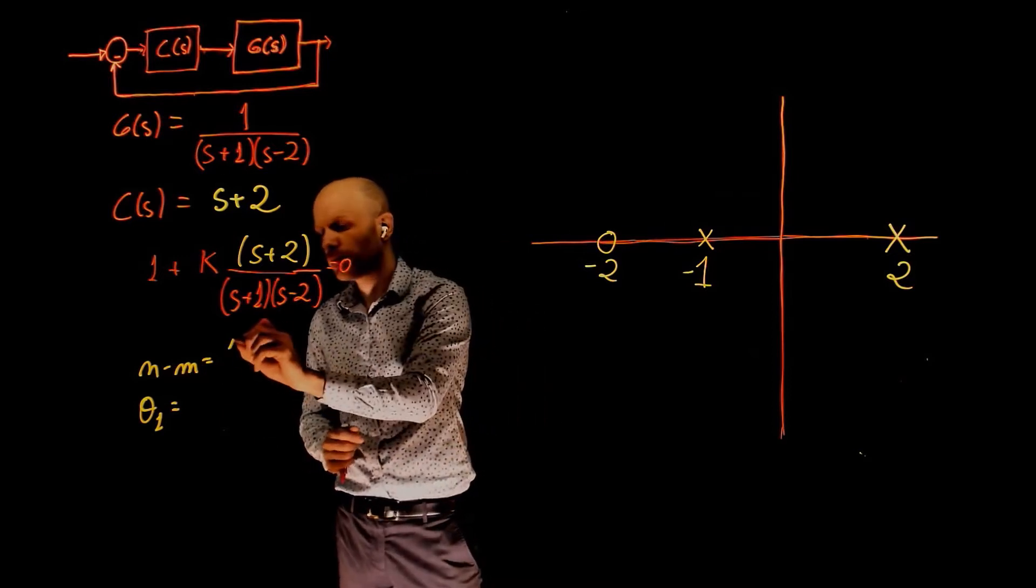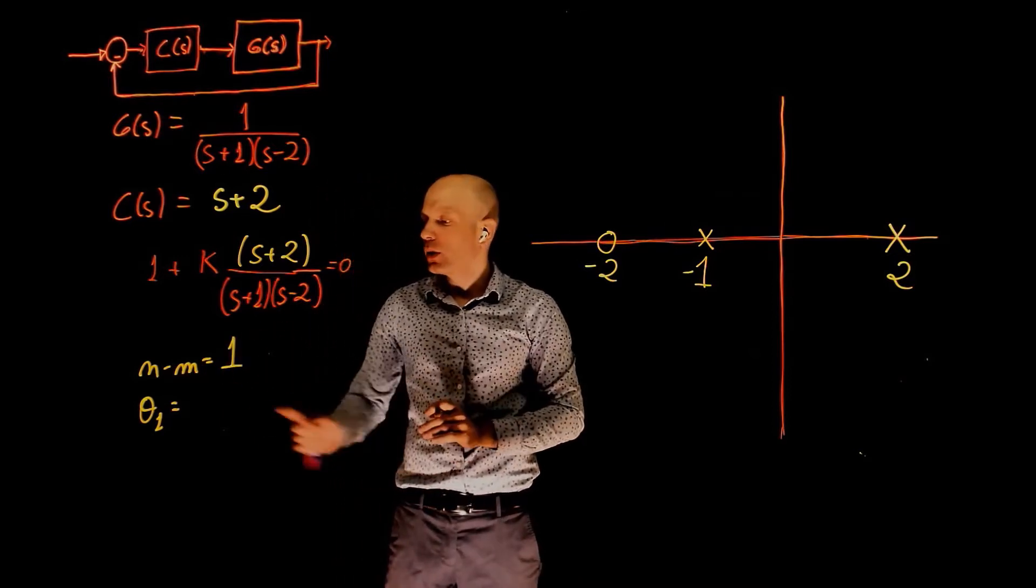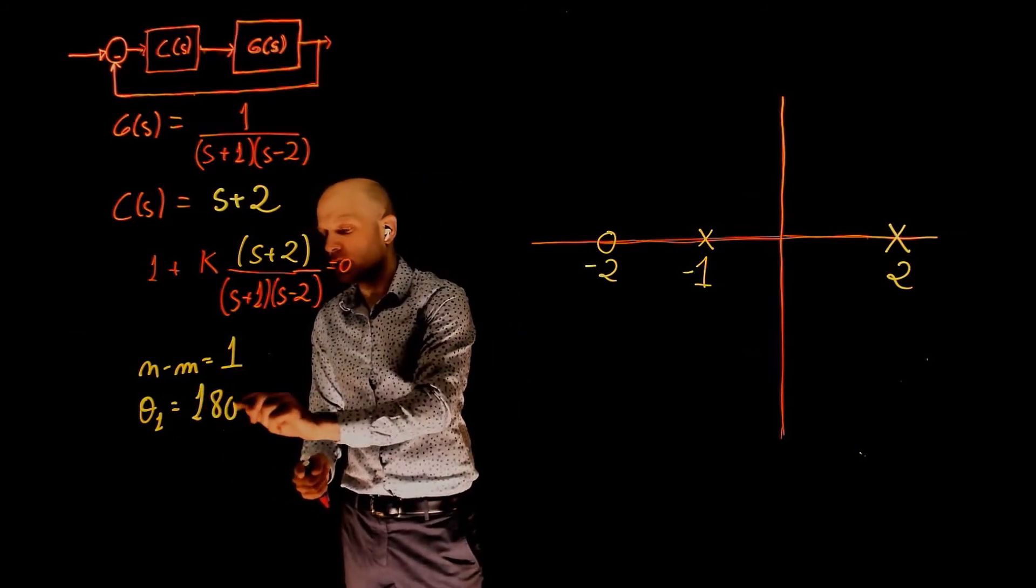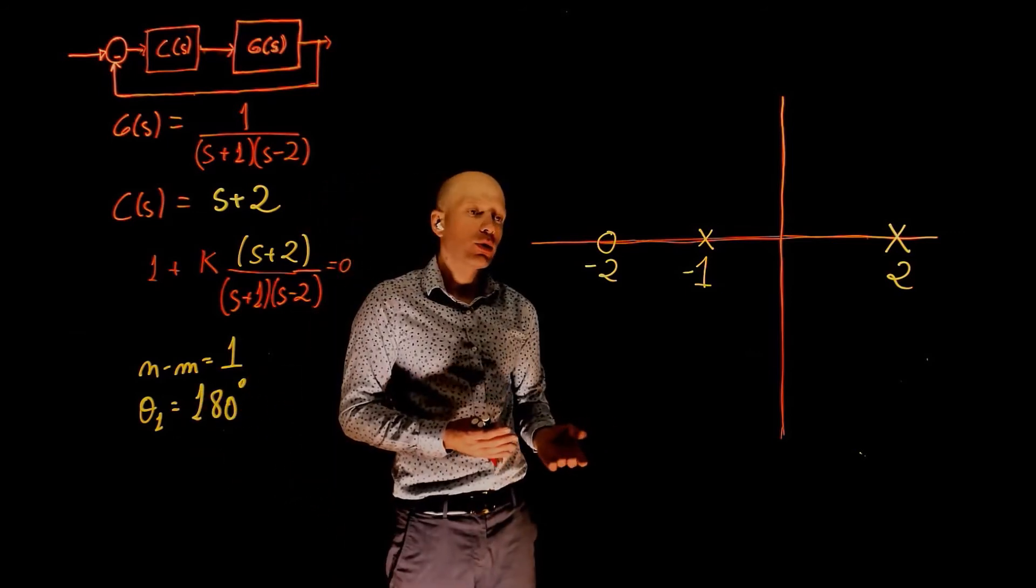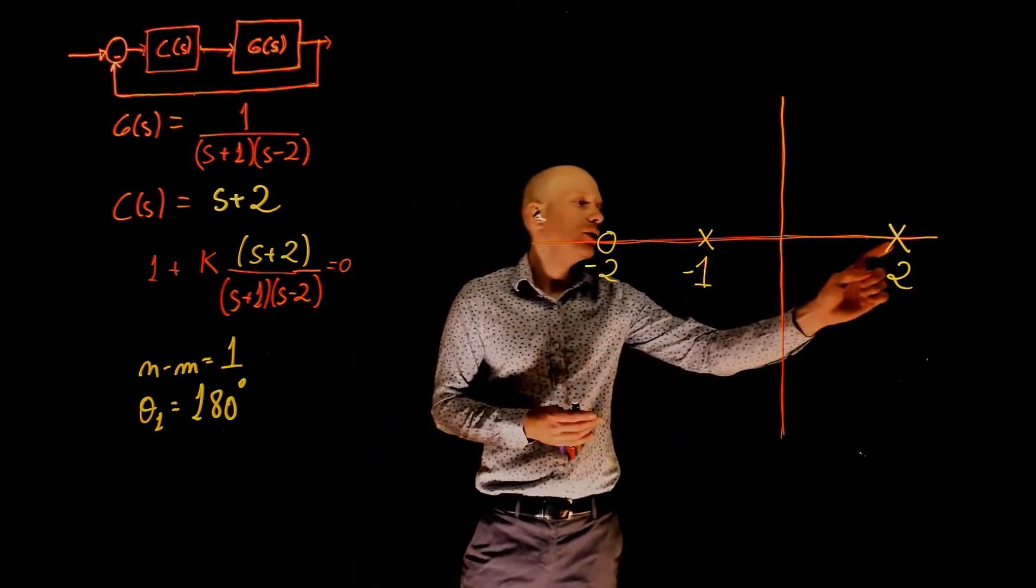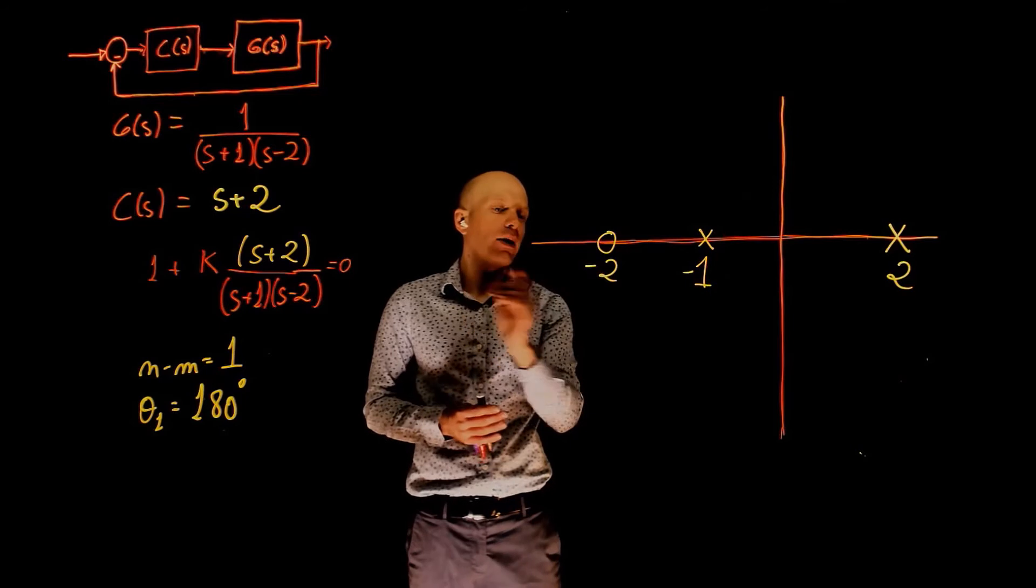N minus M is 1. And when N minus M is 1, we know that the asymptote takes an angle of 180 degrees. Where is the root locus now? Well, the root locus exists between these two poles and exists to the left of negative 2.